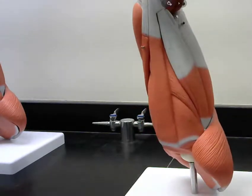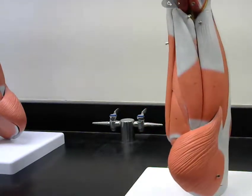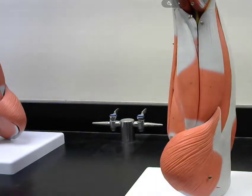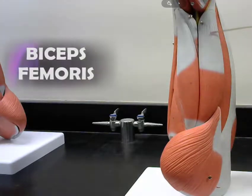And let's swing this around to a posterior view. And look at these hamstring muscles. This is the biceps femoris.